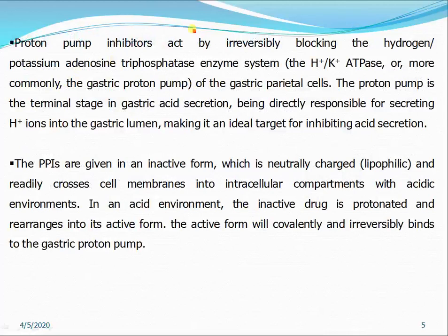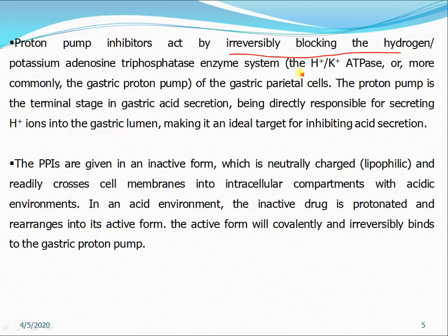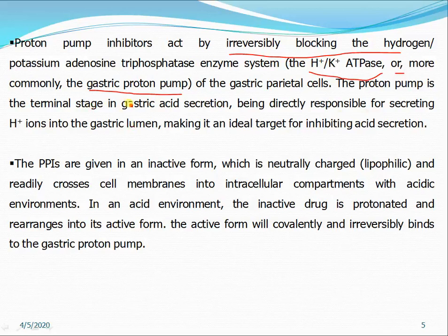Proton pump inhibitors act by irreversibly blocking the hydrogen-potassium adenosine triphosphate enzyme system — the ATPase system, commonly called the gastric proton pump of gastric parietal cells. The proton pump is the terminal stage in gastric acid secretion, being directly responsible for secreting H+ ions into the gastric lumen, making it an ideal target for inhibiting acid secretion.